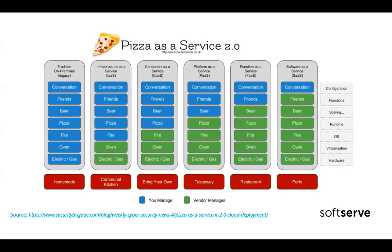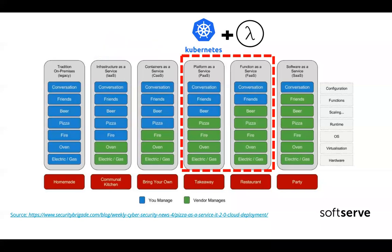Some time ago I found some kind of interesting comparison between pizza and different types of services, like platform as a service. I'm trying to use it to describe what we're talking about today. As you can see, we would like to do something like: let's imagine we have a Kubernetes, which is a kind of platform as a service solution — not necessarily, it's kind of mixed — but let's assume that today Kubernetes is a pure platform as a service solution.